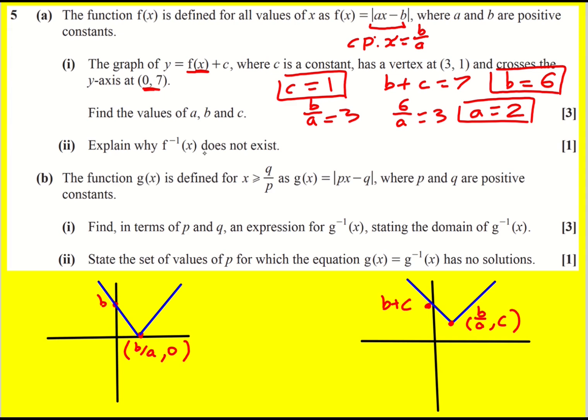Part two: we're asked to explain why the inverse of f does not exist. Now for a function to have an inverse it has to be one-to-one, because that means when you swap it around, the output and the input, it's still one-to-one. Whereas if you have a many-to-one function, which is absolutely fine, then when you swap it around it becomes one-to-many. This is not a function. So we don't need to go into lots of detail on this, we just need to say f(x) is not one-to-one.